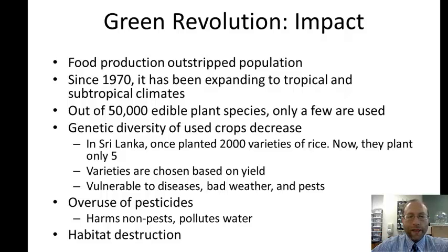Some negative impacts: out of 50,000 edible plant species, we're only using a few. Genetic diversity is decreasing—in Sri Lanka, they once planted 2,000 varieties of rice and now plant only five. Because genetic diversity is so much less, crops are much more vulnerable to diseases, bad weather, and pests. Also, pesticides are overused, which can pollute water, harm non-pests, and have other impacts we'll cover in the next chapter.